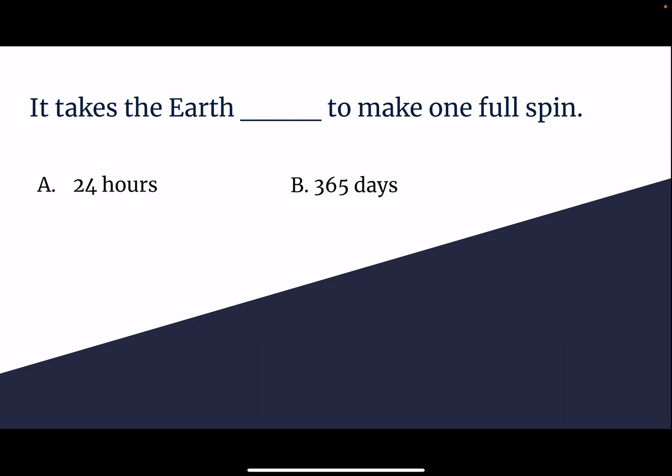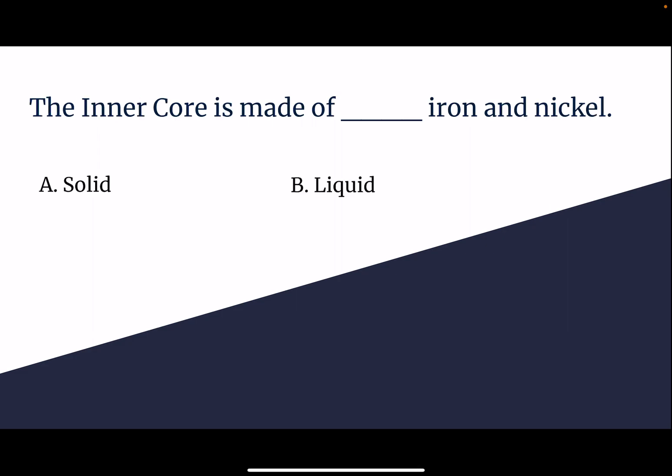It takes the Earth 24 hours, or 365 days, to make one full spin? The inner core is made of solid or liquid iron and nickel? The inner core is made of solid iron and nickel.